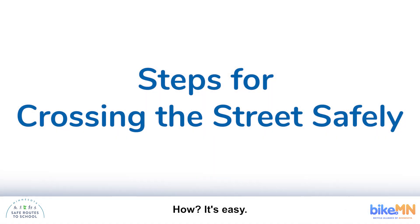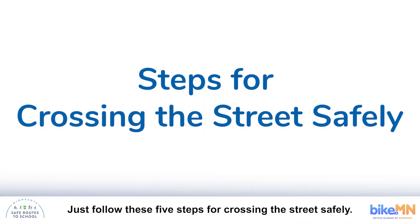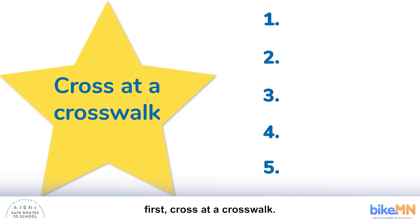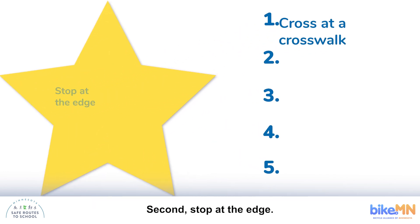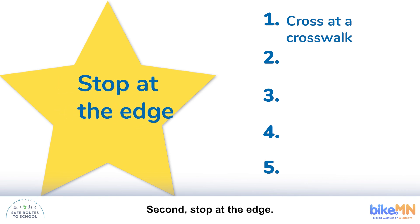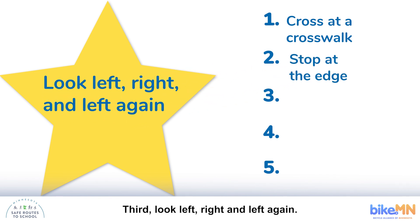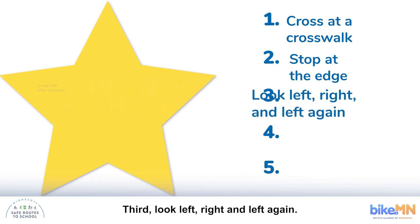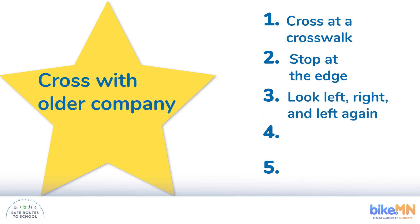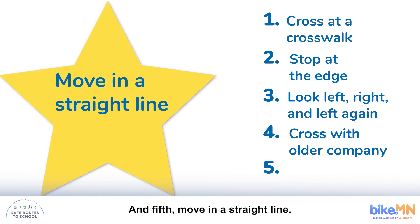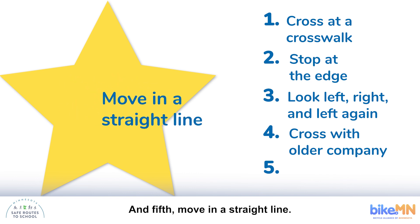How? It's easy. Just follow these five steps for crossing the street safely. The five steps are: first, cross at a crosswalk; second, stop at the edge; third, look left, right, and left again; fourth, cross with older company; and fifth, move in a straight line.